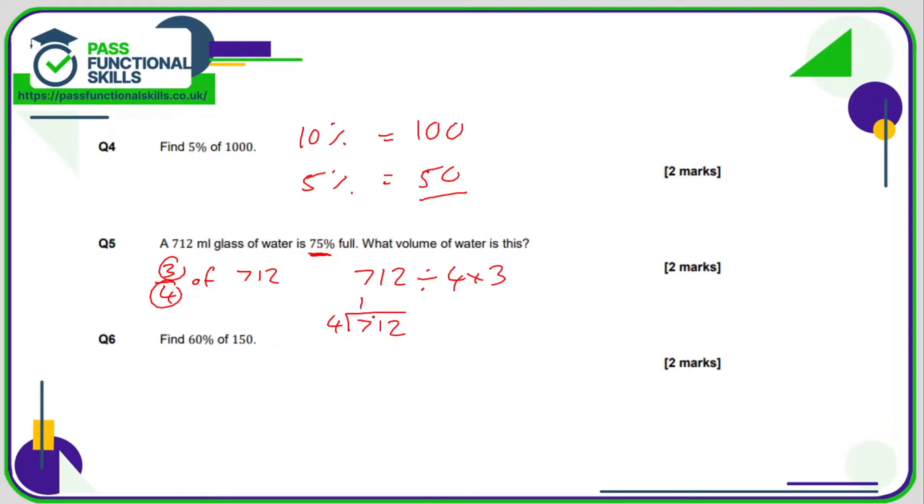4s into 7 goes 1, remainder 3. 4s into 31 is 7, remainder 3. 4s into 32 is 8. So we want to multiply 178 by 3. 3 eights are 24, carry 2. 7 threes are 21, 22, 23, carry 2. 1, 3 is 3, plus 2 is 5, so the answer is 534 milliliters.